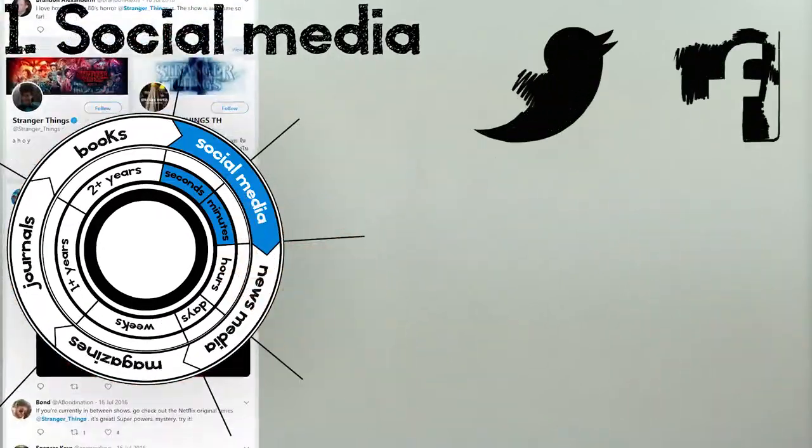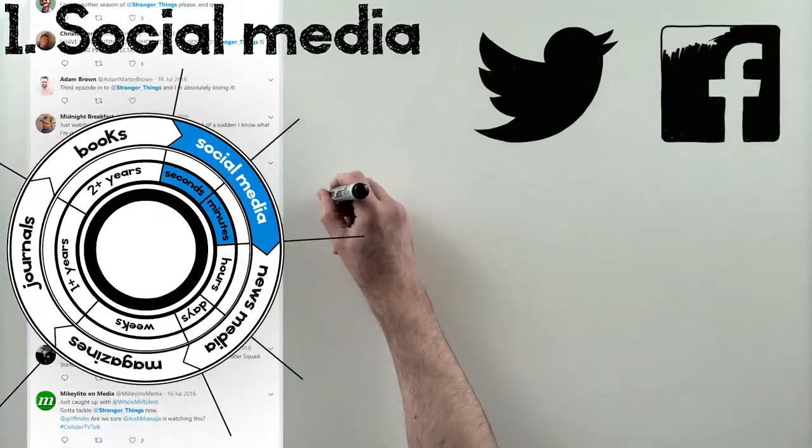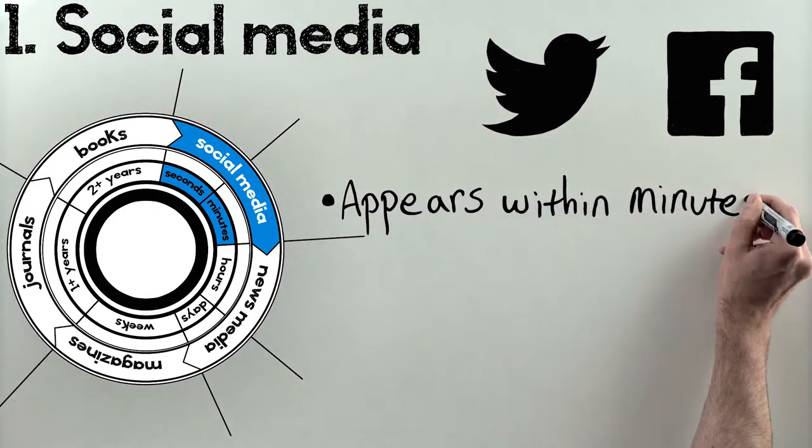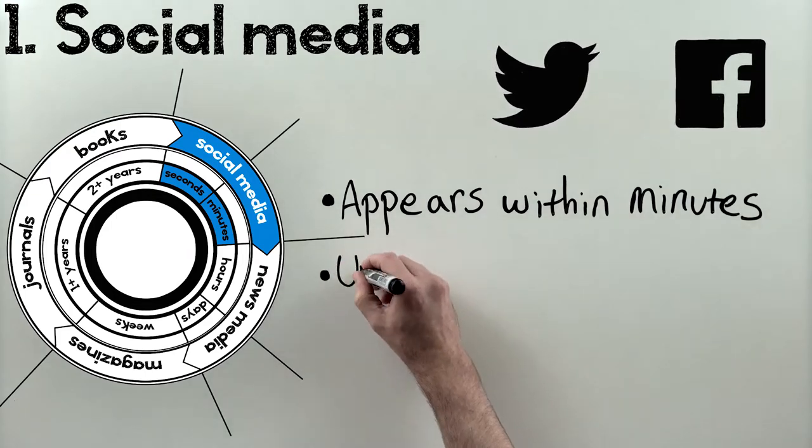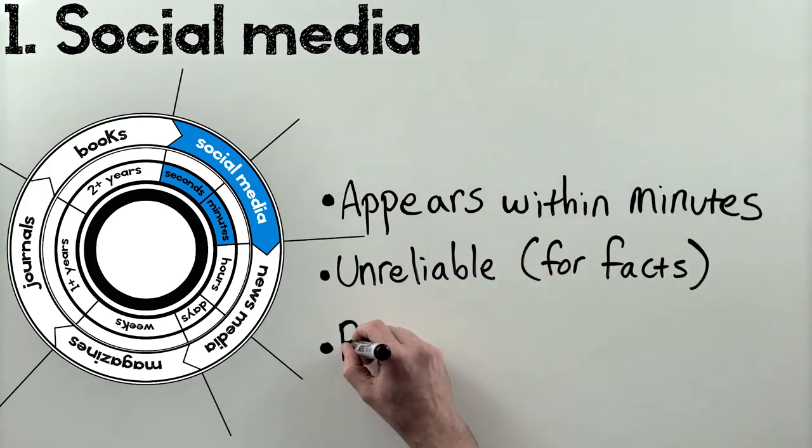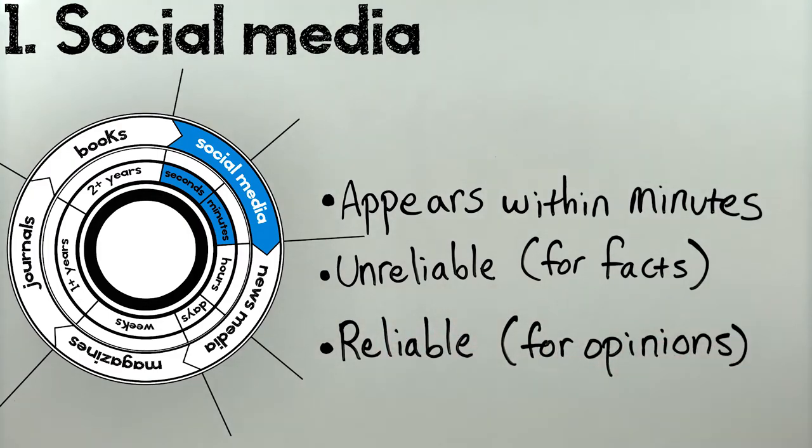Social media is the first stage of the information cycle, because that's where people first start producing information about an event as they react to it in the minutes and hours after the event occurs. The information produced isn't what anyone would consider reliable, but it does provide a real-time picture of public interest and opinion.